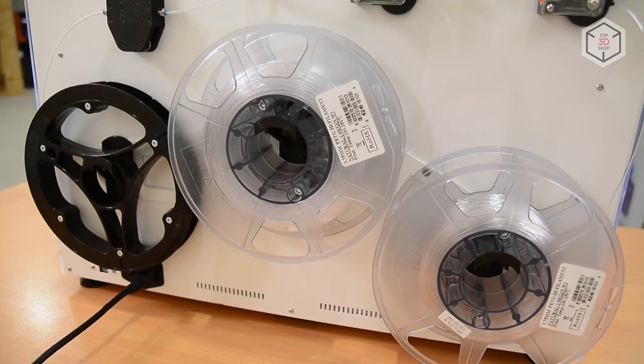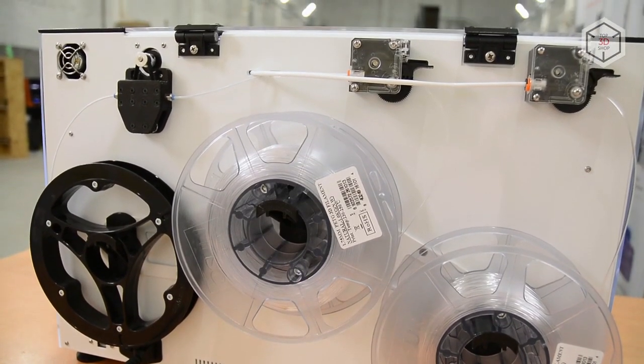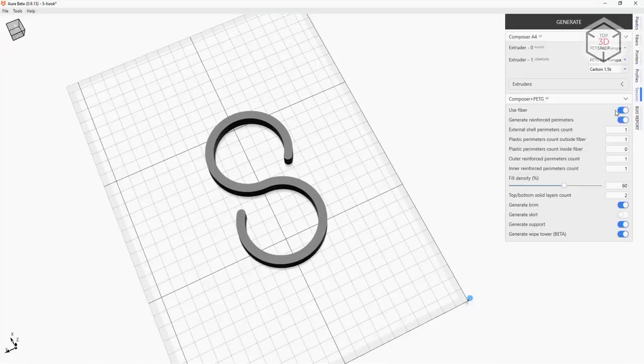Filament spools are placed outside, on the back panel of the printer. Filament is fed through Bowden tubes. The unique technology requires a completely different approach to preparing a digital model for printing.